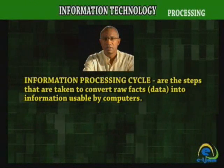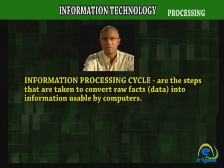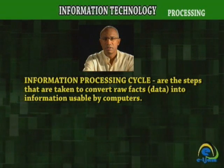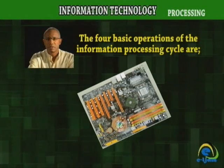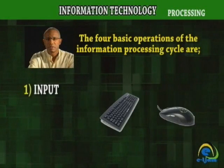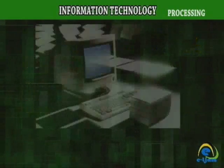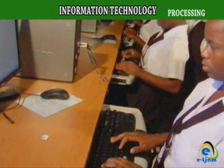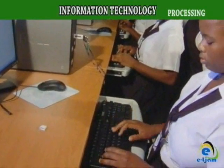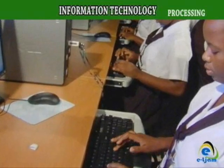The Information Processing Cycle refers to the steps taken to convert raw facts or data into information usable by computers. The four basic operations are Input, Processing, Output, and Storage. A computer is a machine that performs the Information Processing Cycle. It is called a cycle because after the final stage of processing, everything begins again.